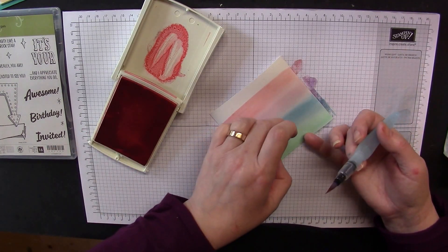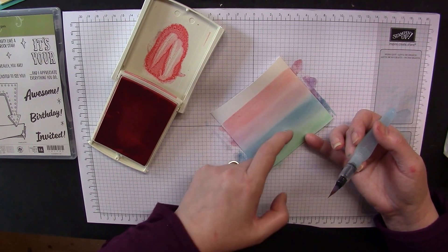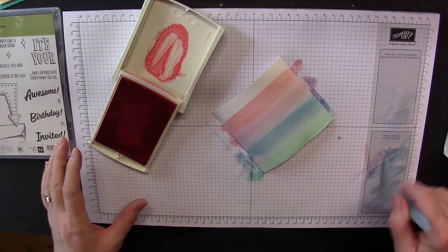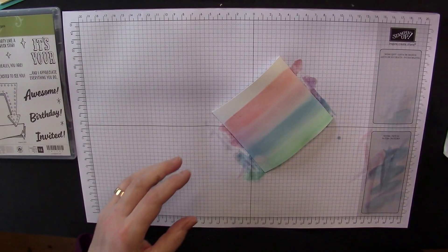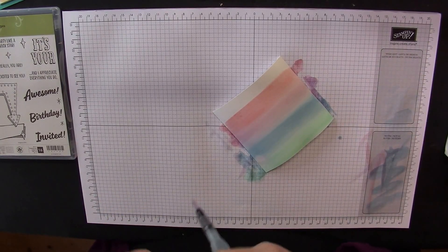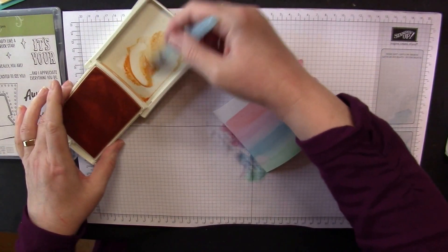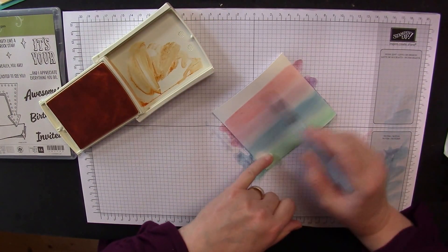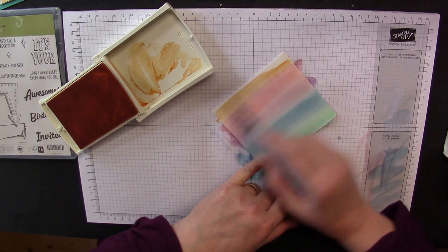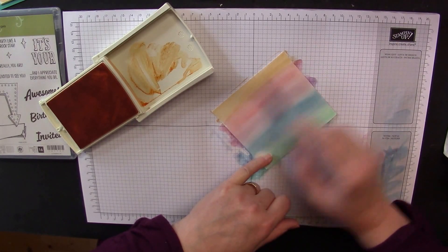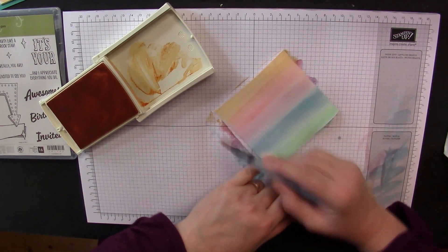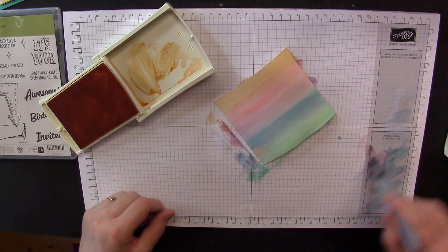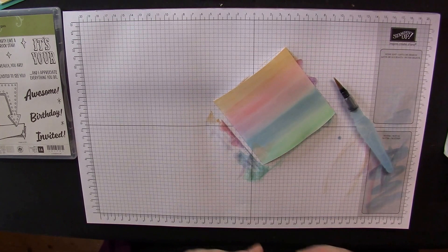Got a bit of paper on there. And then finally, we've got Peekaboo Peach, another one I really, really like. That goes across the top. Blend it down into the pink again. And that is your background. Simple but effective.